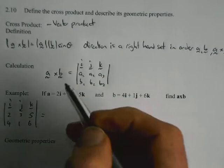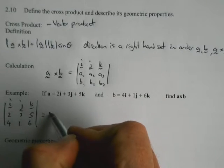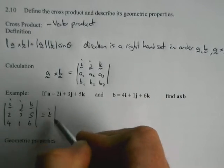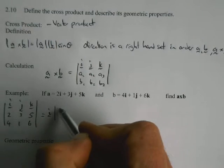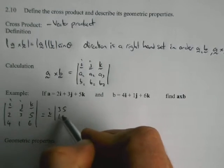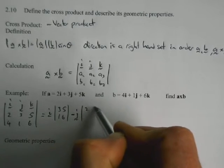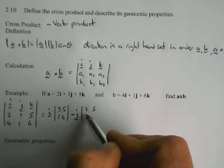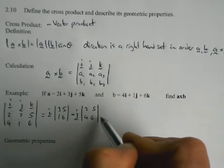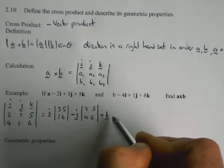And using the rules of determinants, it's the first thing times the determinant of what's left, which is 3, 5, 1, 6, minus the second one, which in this case is J, and what's left if you cross out the J column is 2, 5, 4, 6, plus K,